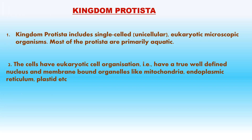Kingdom Protista includes single-celled, unicellular, eukaryotic microscopic organisms. Most protists are primarily aquatic. The cells have eukaryotic cell organization — a true well-defined nucleus and membrane-bound organelles like mitochondria, endoplasmic reticulum, and plastids. This kingdom forms a link with other kingdoms like Plantae, Animalia and Fungi. Protists exhibit various lifestyles: some resemble plants, some animals, some fungi. Autotrophic plant-like forms are protistan algae; heterotrophic animal-like forms are protozoan protists; and decomposer-fungi-like forms include slime molds.